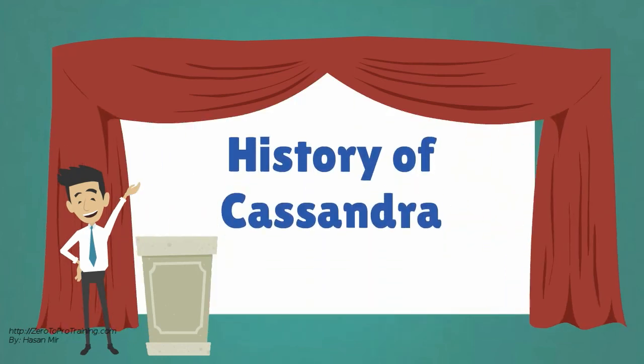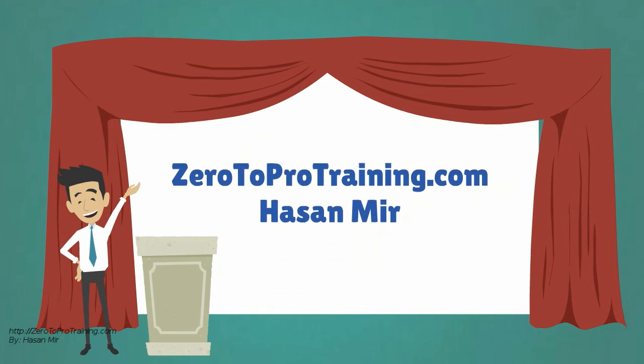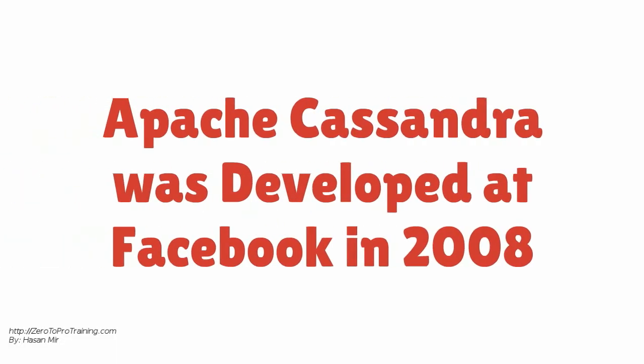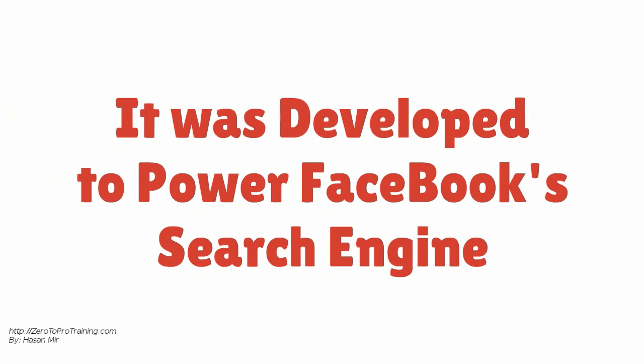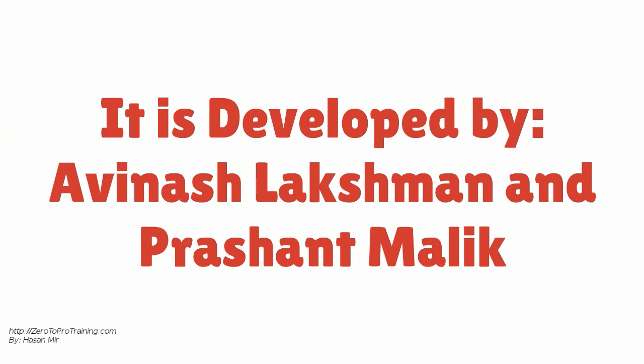History of Cassandra, presented by Zero2ProTraining.com. Apache Cassandra originated at Facebook in 2008. It was developed to power Facebook's inbox search feature. The original developers were Avinash Lakshman and Prashant Malik.